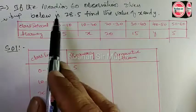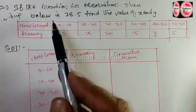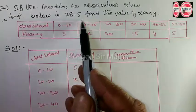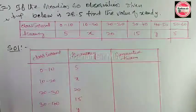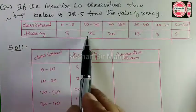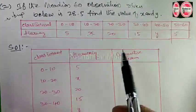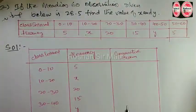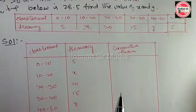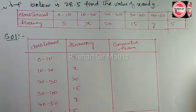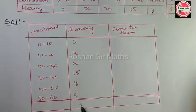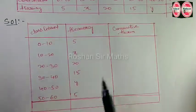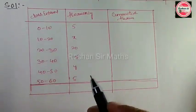The median is given for 60 observations. The mean given is 28.5. Find the value of x and y. We will use the same method — cumulative frequency table.